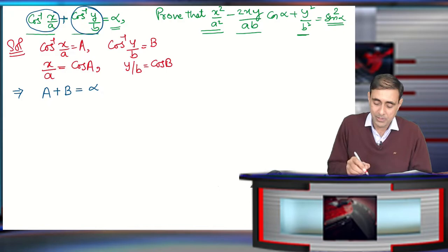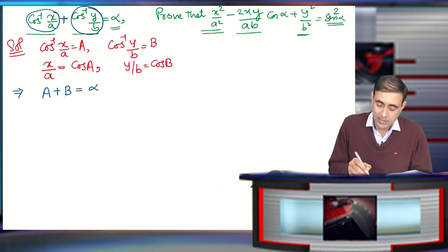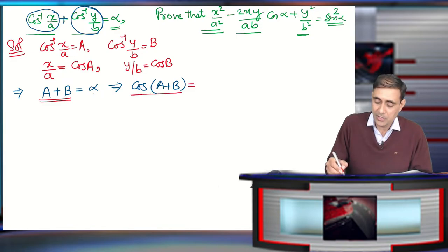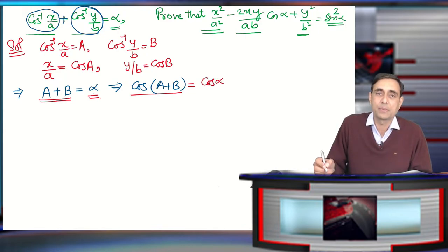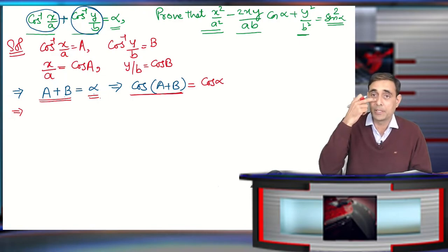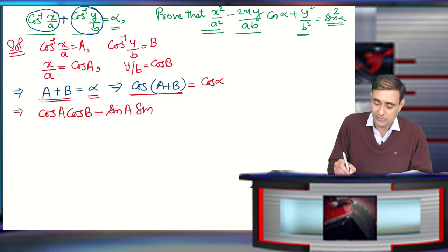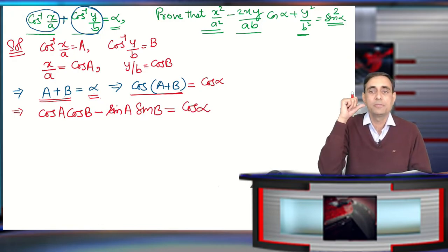Based on our substitution, we now have the equation A + B = α. If we apply cos to both sides of this equation, the left side becomes cos(A + B) and the right side becomes cosα. Expanding the left side using the cos addition identity: cos(A+B) = cosA·cosB − sinA·sinB = cosα.